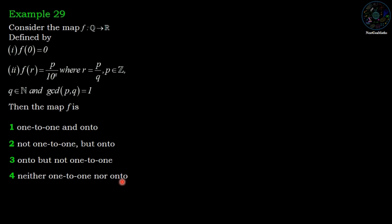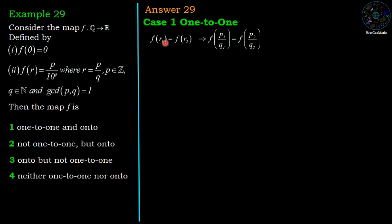Answer: Case 1, one-to-one. Suppose F(r1) = F(r2), implies r1 = p1/q1 and r2 = p2/q2. Therefore F(p1/q1) = F(p2/q2).